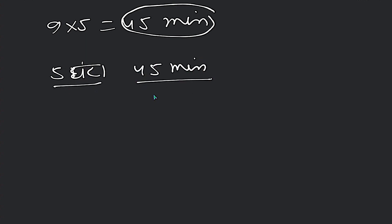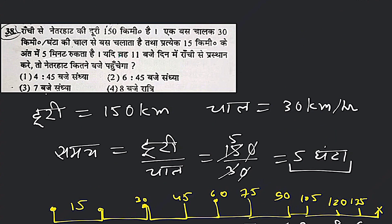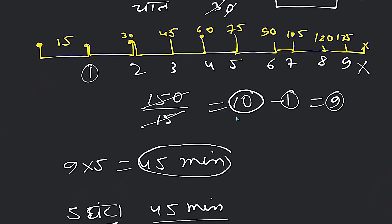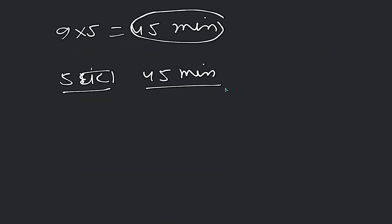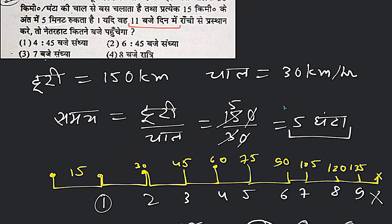Now we can see when it started. It started at 11 o'clock. Now it's simple. 11 o'clock plus 5 hours 45 minutes. So 1 hour makes it 12. Then 4 hours 45 minutes. So it's 4:45 PM. So the answer is option number 1.